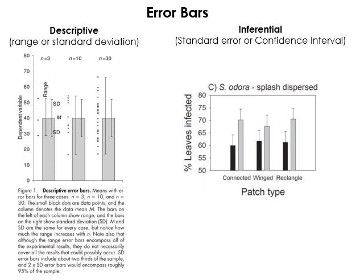On the left we have a descriptive statistic — the range of values or the standard deviation. Each gray bar shows the mean, and you can see the data points for reference, with sample sizes of 3, 10, and 30. The top of the gray bar is the mean and the error bar whiskers show the range and standard deviation. Notice that standard deviation doesn't vary with sample size because it's based on the spread of the data — the shape of the distribution.